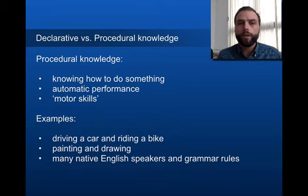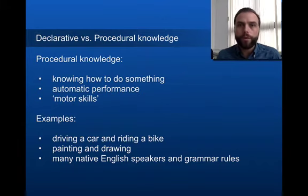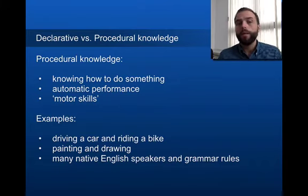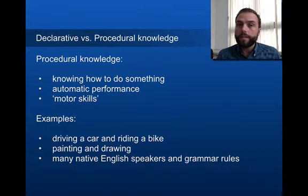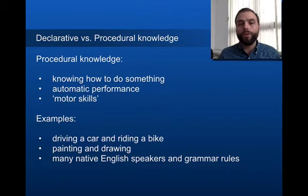Driving a car and riding a bike are both examples of procedural knowledge. When you're driving, a lot of things become automatic — changing gears, pressing the brake, pressing the accelerator, moving your feet, indicating. When riding a bike, you're automatically balancing, pedaling, and turning the handlebars. A lot of body actions become automatic.